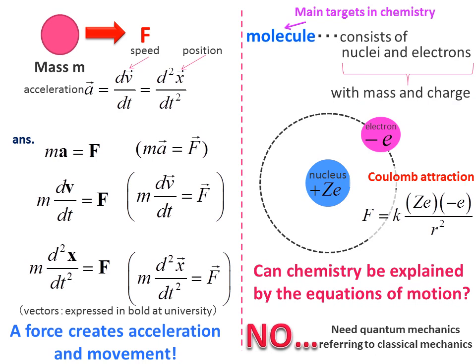For example, in the presence of a nucleus with plus Ze charge and an electron with minus e charge, the two particles are attracted by a force called coulomb attraction, which is inversely proportional to the square of the distance r and proportional to the product of the two charges.